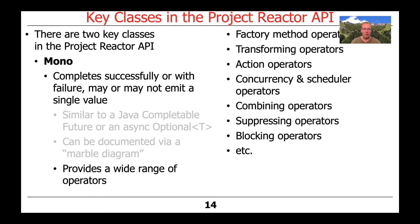There's a very wide range of operators provided as part of the Mono class in the Project Reactor API. These include factory method operators that create various types of Monos from other types of data, transforming operators, action operators that have essentially side effects, concurrency and scheduling operators used to run operations in background threads, combining operators that take emissions from multiple operators and combine them together, suppressing operators that ignore the payload from a Mono, blocking operators that can be used when you really need to wait for the final result, and many more. You'll find that there are many, many operators defined on the Mono class in Project Reactor.